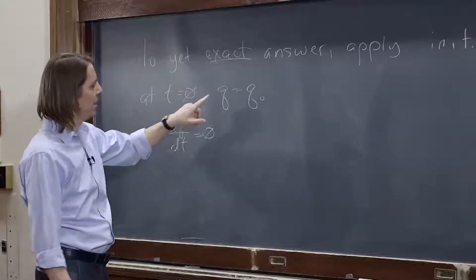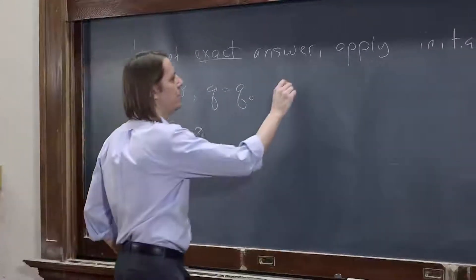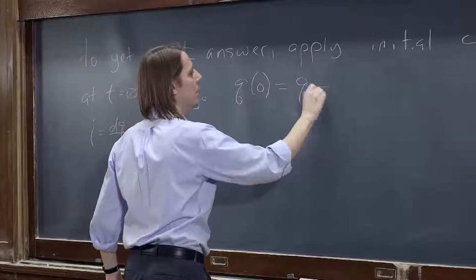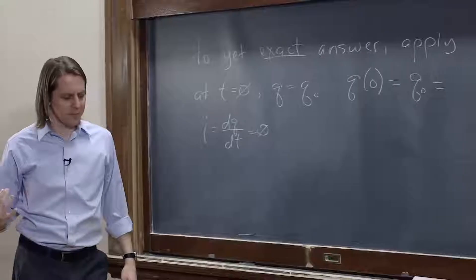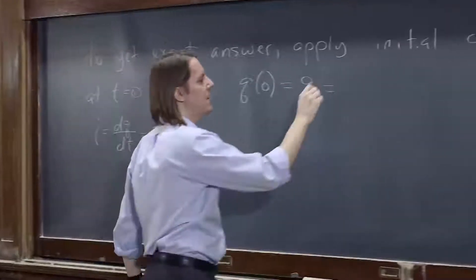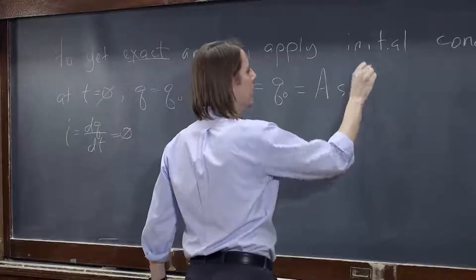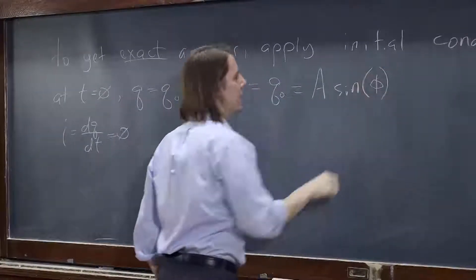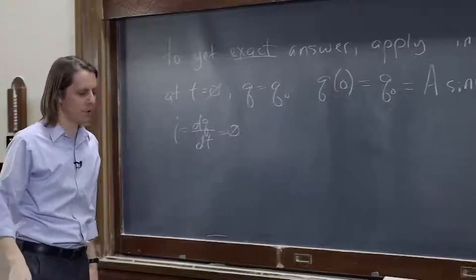So let's apply this one first. So q at zero, we said, equals q naught. But if we plug that into the first guess, the sine guess, that's a sine. Omega t is zero, because this is at time zero. That's a sine times phi. There we go.